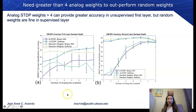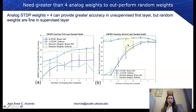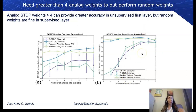We also examined classification accuracy as a function of the number of bits available. We find that as long as you have approximately four analog weights, we can outperform random weights. We don't need a large number of weights, but we want four or more.